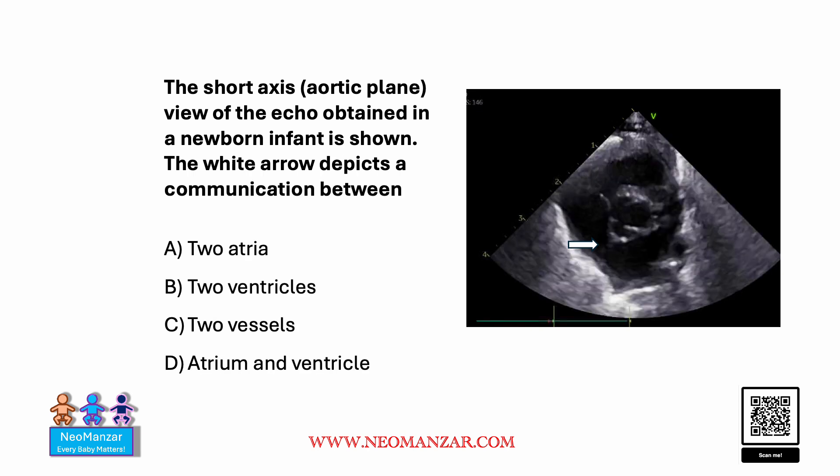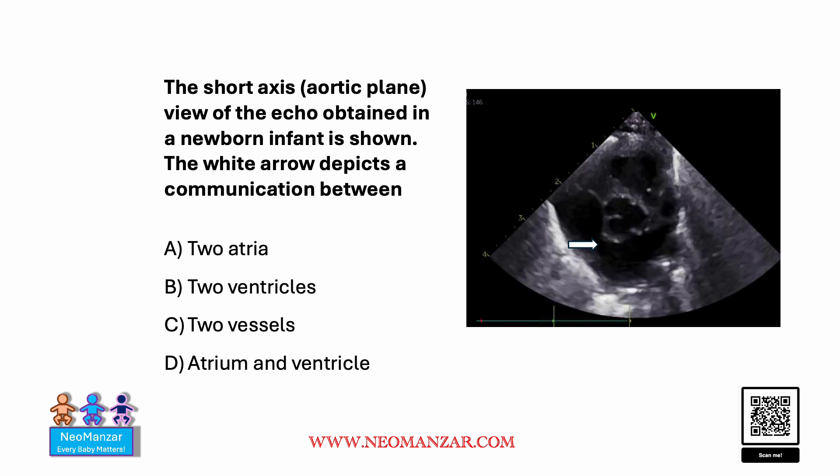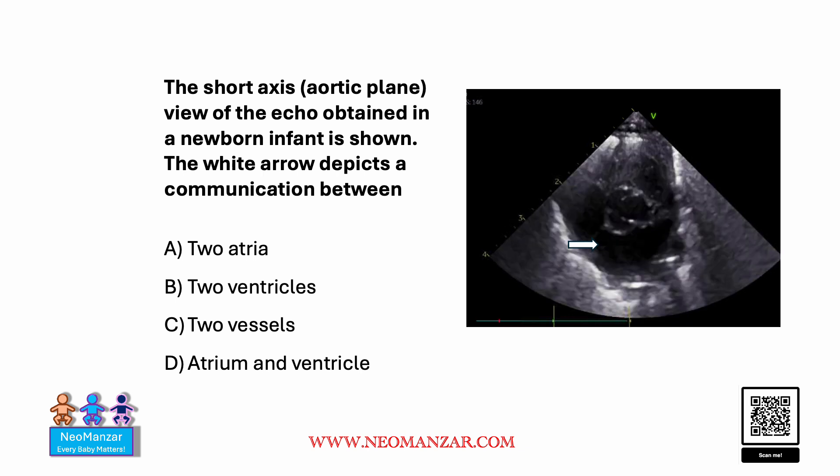Let's look at another version of the same question. Here the question is changed but uses the same echo. They are asking: the white arrow depicts a communication between two atria, two ventricles, two vessels, or atrium and ventricle?